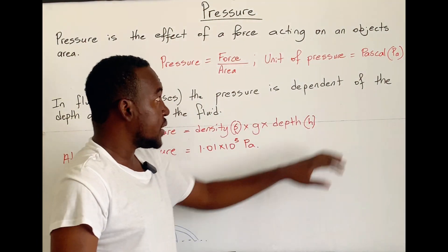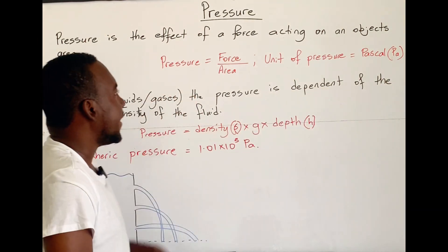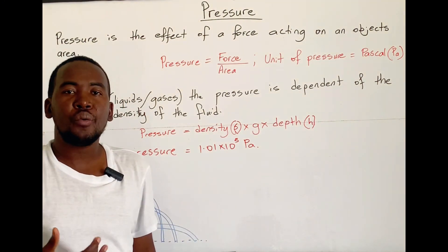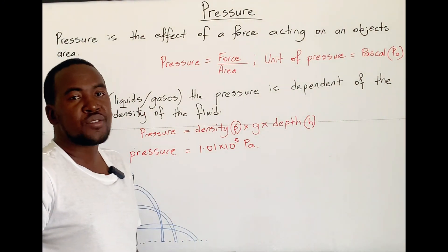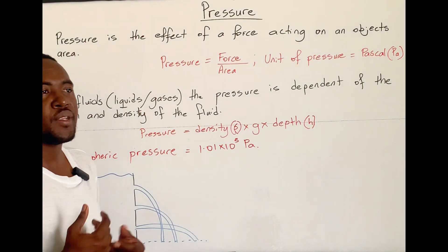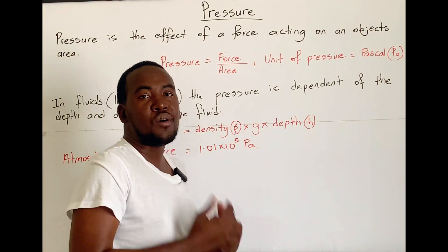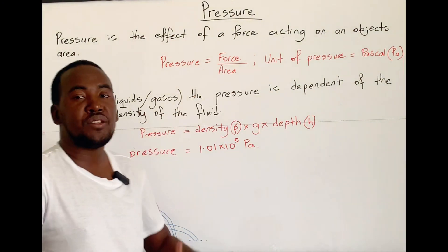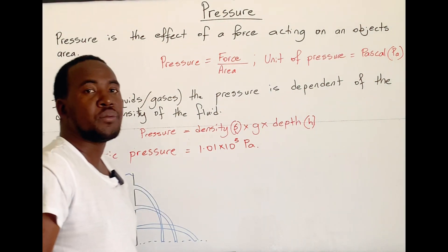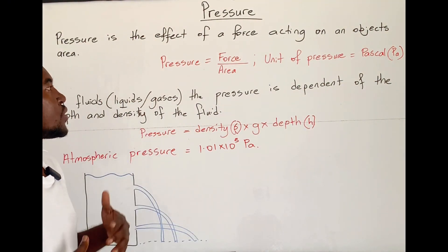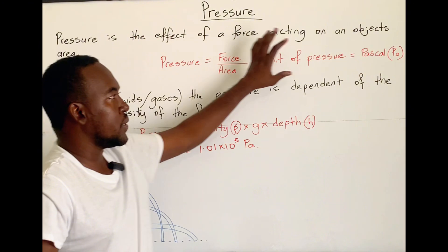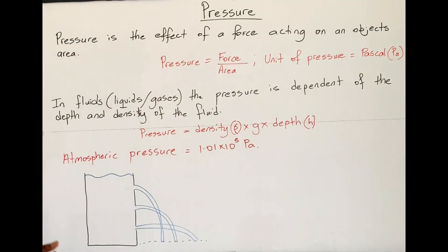We have a unit of pressure — the pascal, which is Pa. It's very important to know that the unit for area should always be in meters squared. Sometimes the examiner will give centimeters squared, but the important thing is to convert all area units to meters squared. This pressure formula — P = F/A — we use for solid objects when solid objects exert a force on something else.